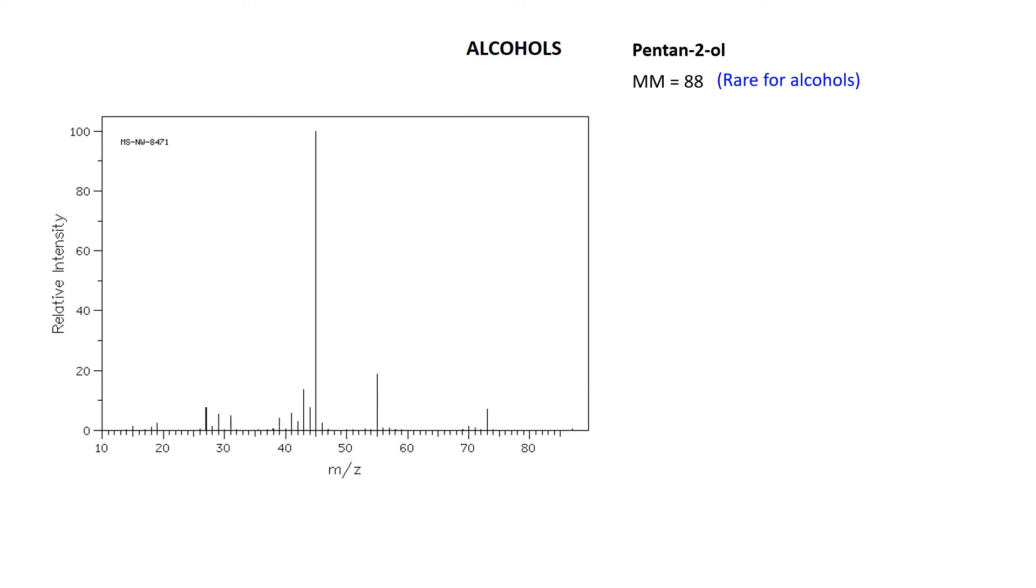Now, the first point I'm going to make about alcohols is that it's very rare that you see the molecular ion. So pentan-2-ol has got a molar mass of 88. I'm not expecting to see a peak at 88. There's just too many good fragments that can come from alcohols. So anyway, without further ado, there's the spectrum.